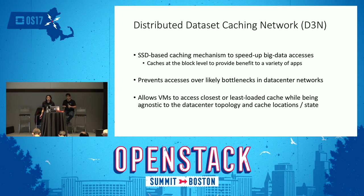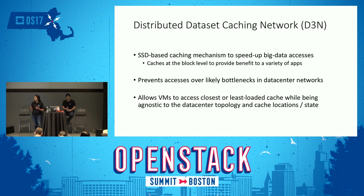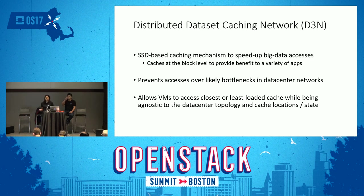Not all data centers have full bisection bandwidth — we see oversubscription and congestion at different levels of the network hierarchy. We use DNS-like lookup servers distributed across our data center to forward requests to the closest or least-loaded cache nodes. This way, VMs don't need to be aware of the data center network topology or the state of caches. We use block-level granularity to cache data to benefit various applications like Spark.